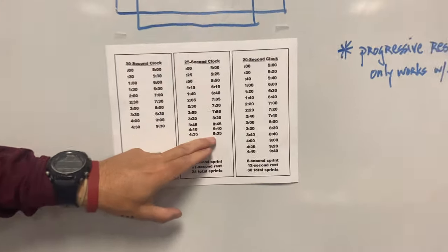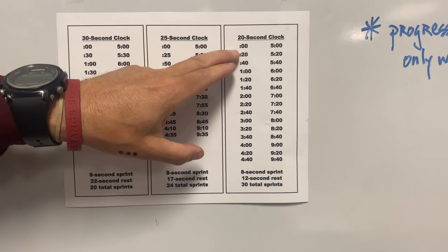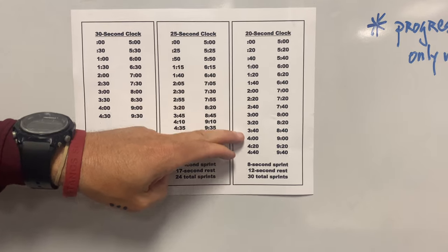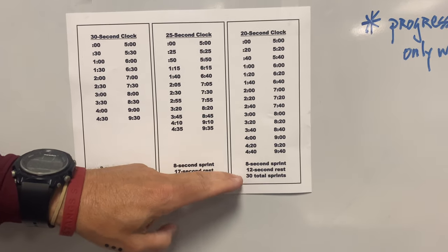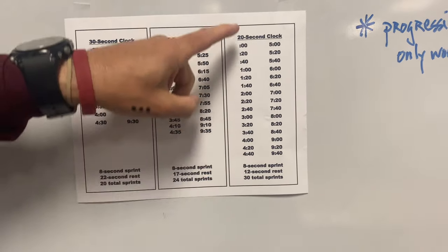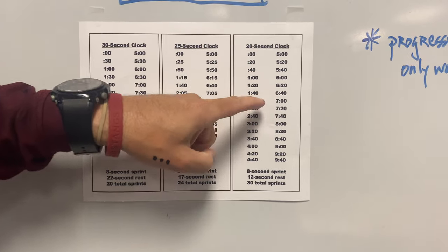Then the third phase is to get to the 20 second clock. Maybe you get to where you can do 10 minutes worth. And now when you go to a 20 second clock, that means again, your sprint is still the same seven or eight seconds. Your rest time is going to get cut down.